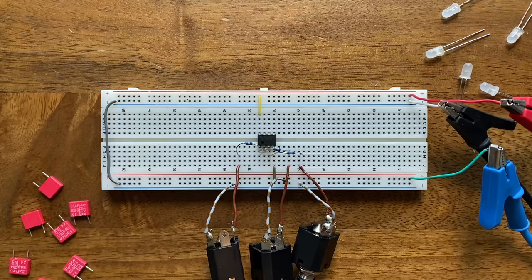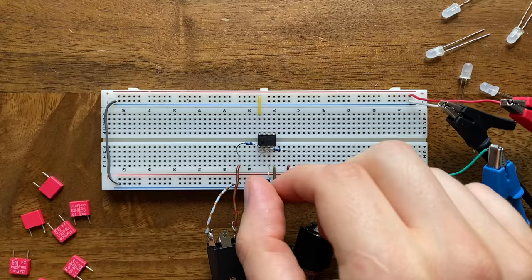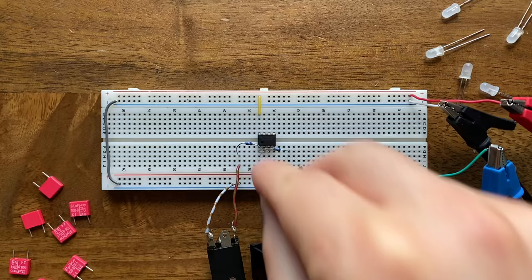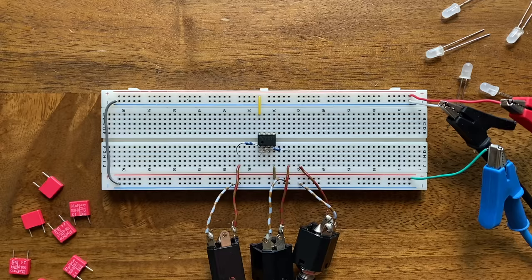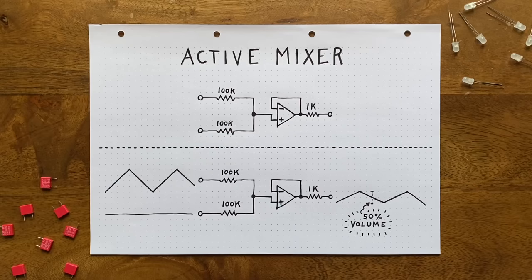We can test this by tying one input resistor to ground, simulating a silent input. Or not connecting it to anything at all, removing the input completely. As you can hear, the volume does indeed go down significantly once I apply the silent signal. This is not really great. Normally you'd expect a mixer to give you the oscillation at full volume in this case. The state of the other signal shouldn't matter. How do we achieve that?